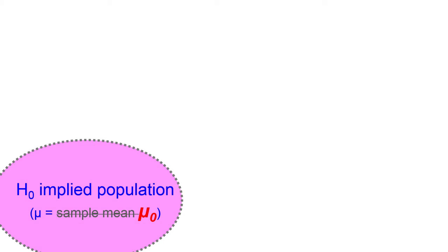This is a graphical representation of what's going on — the population of all possible values that our sample came from if the null hypothesis is true. The mean of this population isn't the sample mean anymore. With confidence intervals the mean was the sample mean — our best guess. But now we do a different logical thing: we give the null hypothesis guess, the devil's advocate, business-as-usual hypothesis.